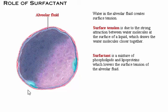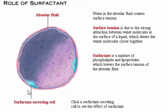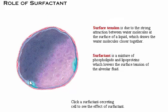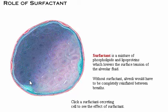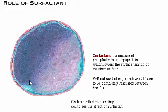Surfactant, which is a mixture of phospholipids and lipoproteins, lowers the surface tension of the fluid by interfering with the attraction between the water molecules, preventing alveolar collapse. Without surfactant, alveoli would have to be completely reinflated between breaths, which would take an enormous amount of energy.